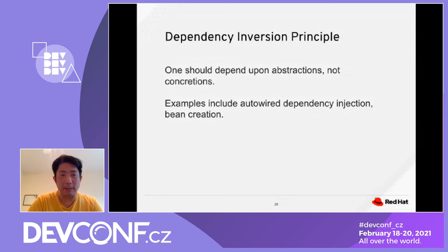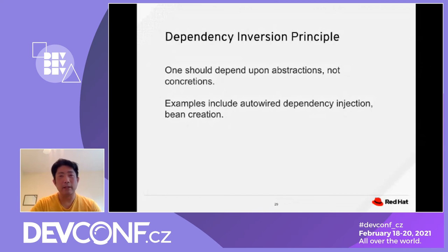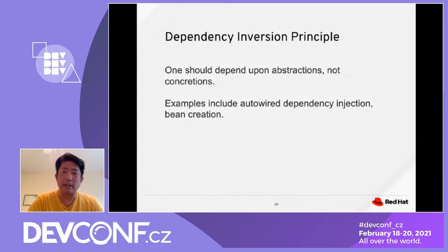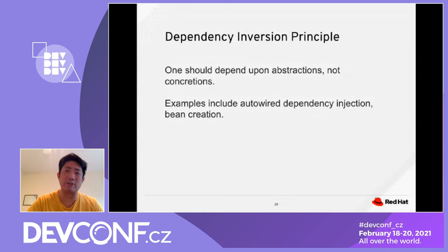How do we apply similar SOLID principles to the OpenShift world? Single Responsibility Principle: each pod should contain multiple containers, each container should be single responsibility — each container should only do one thing. If it is doing more than one thing, then we need to refactor it and create additional containers.